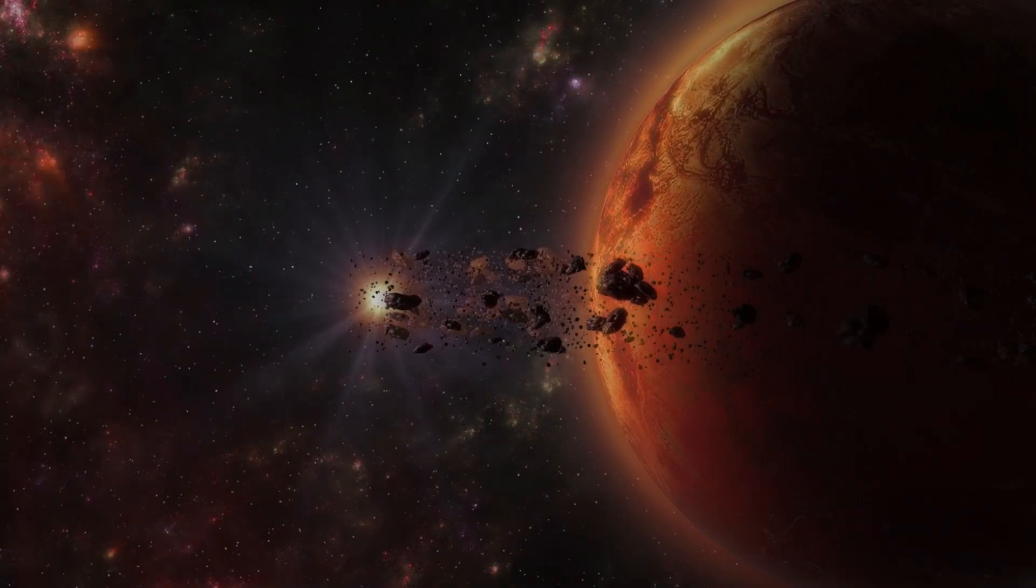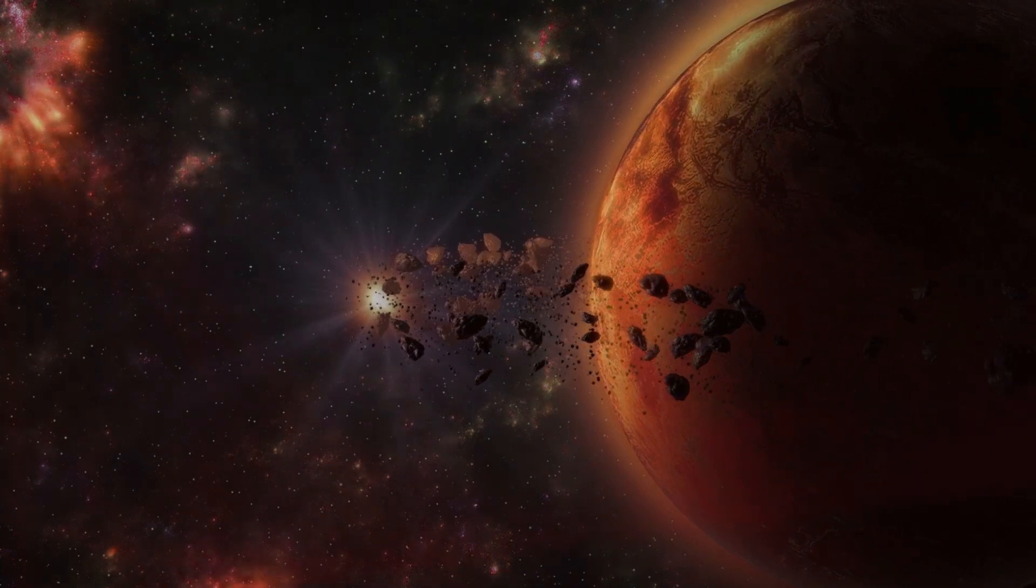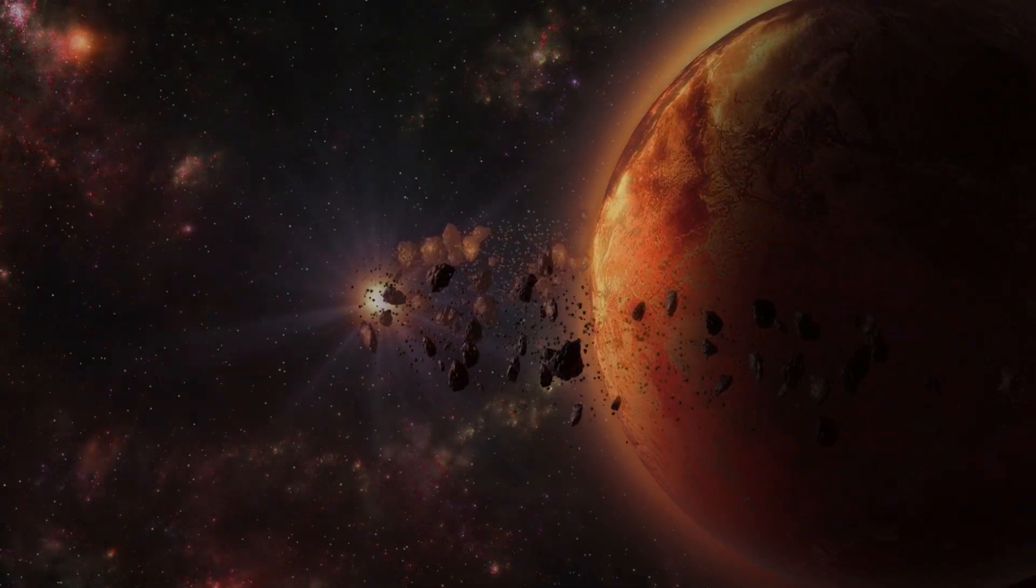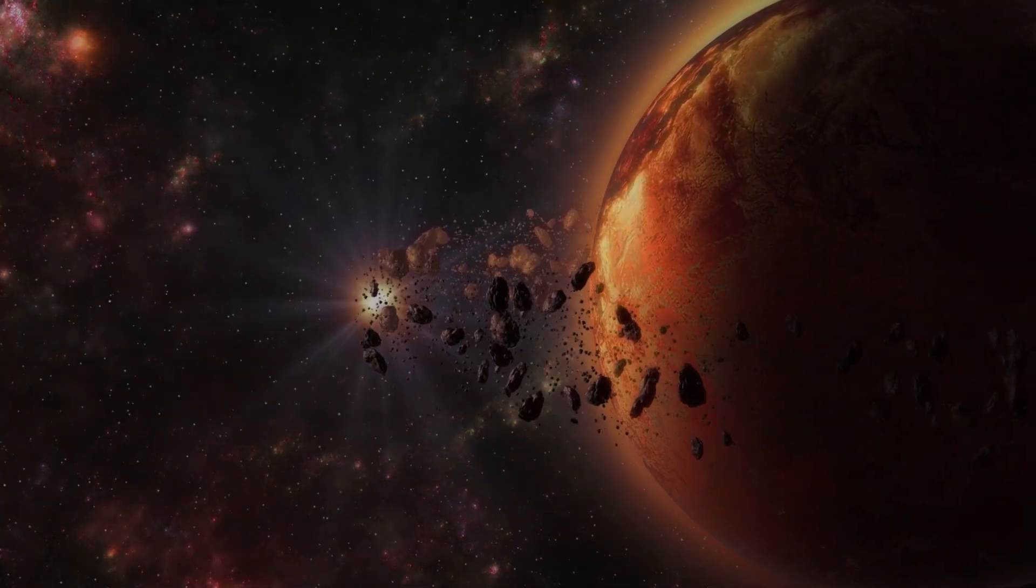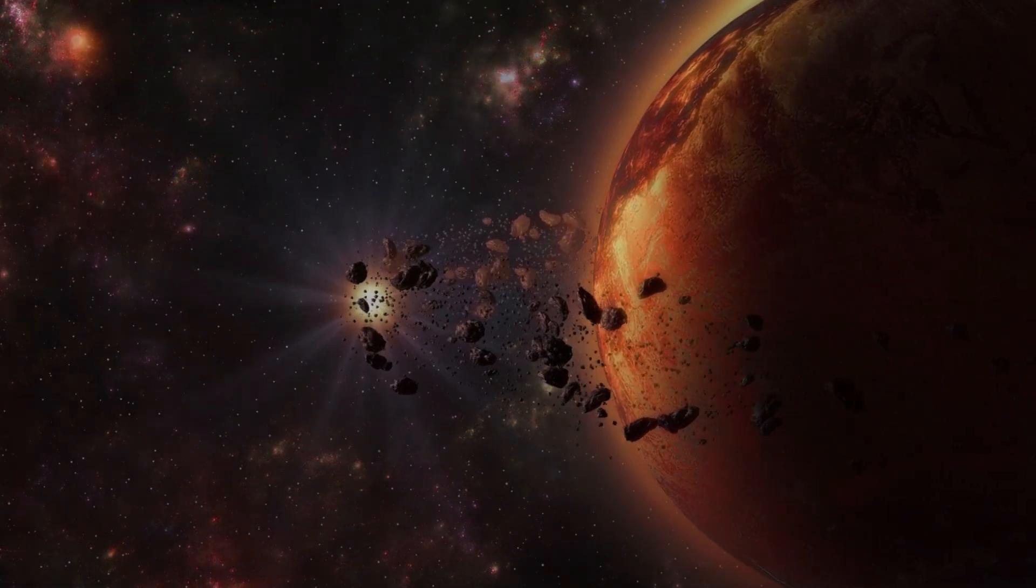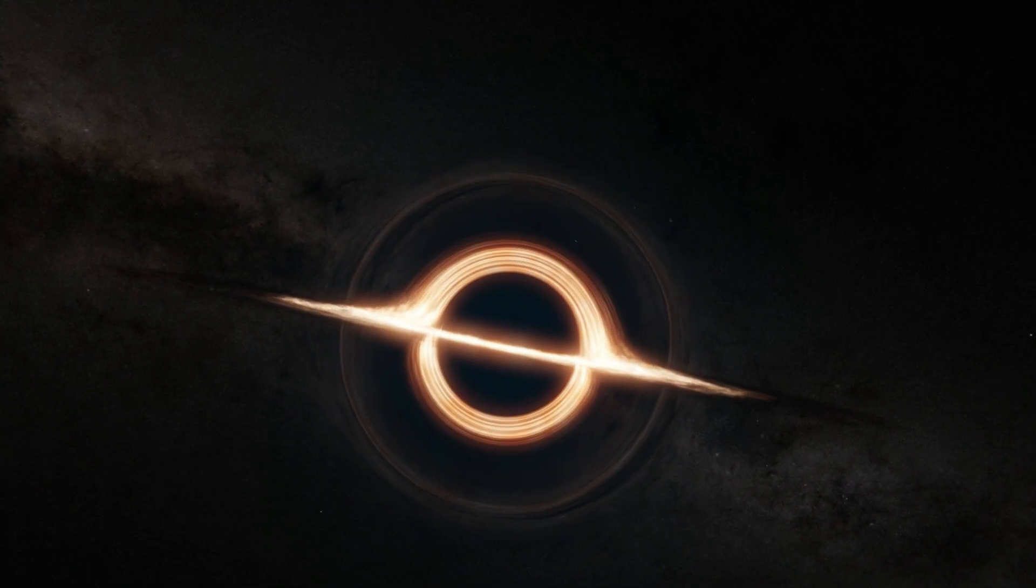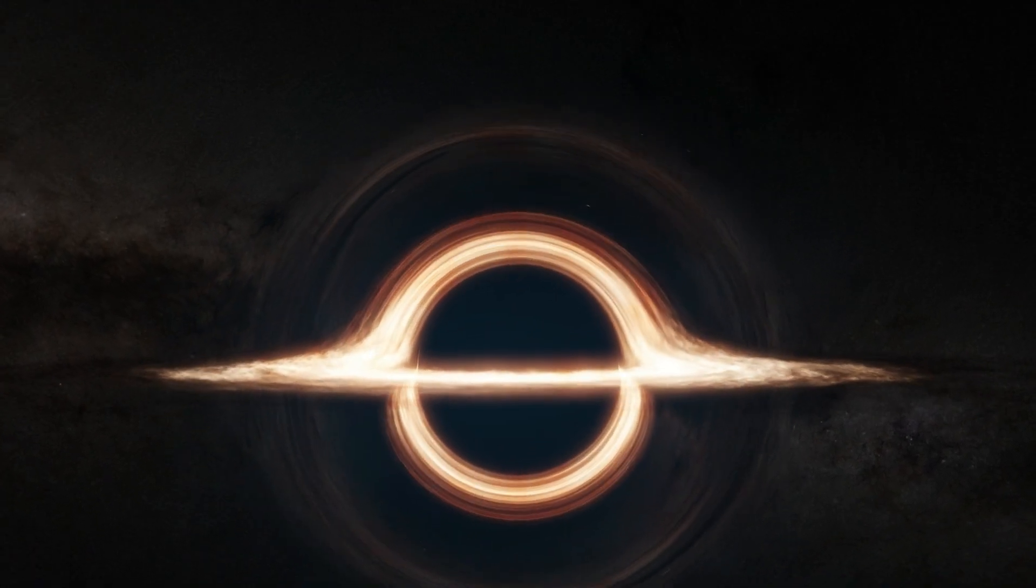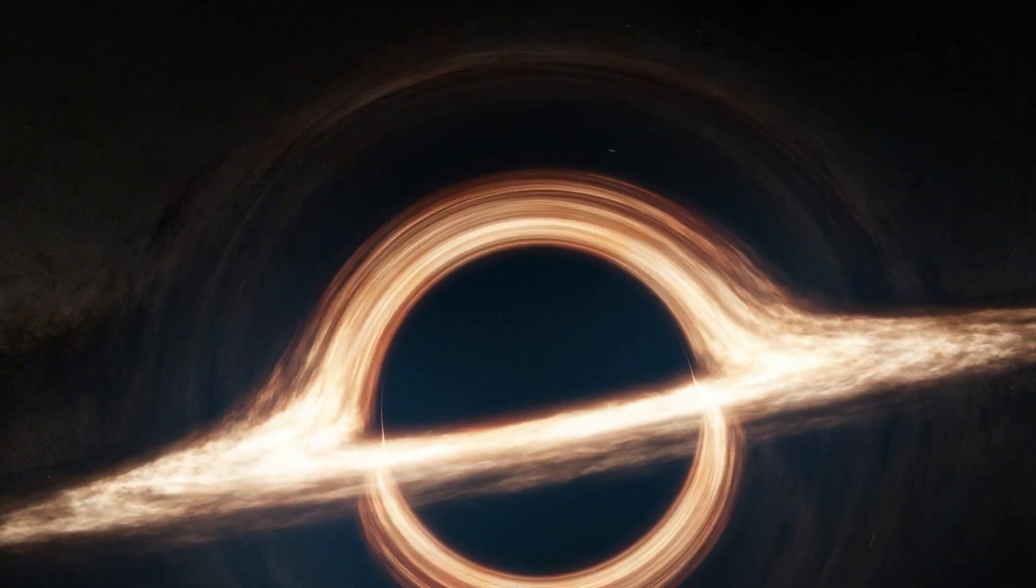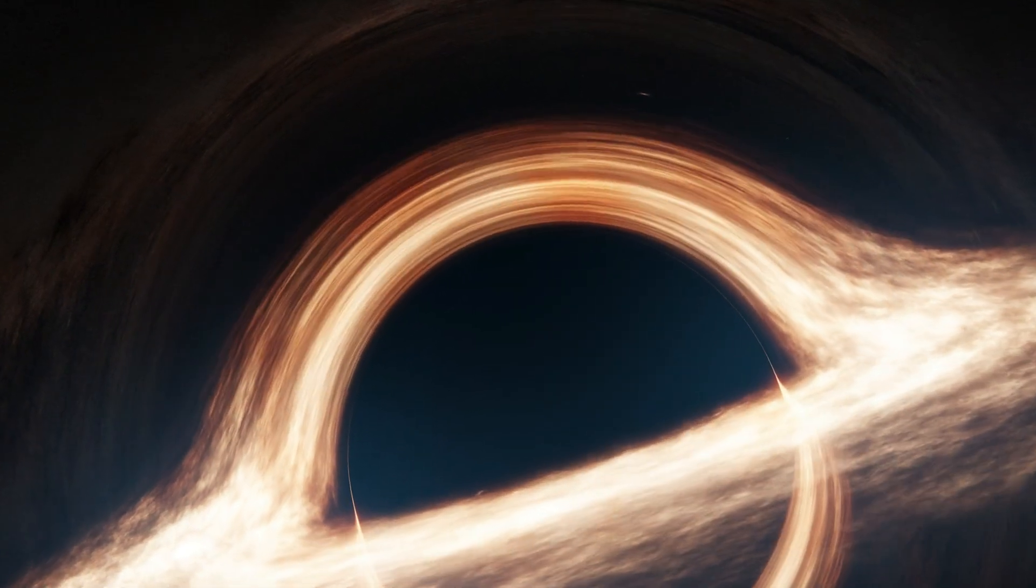Some planets are covered in oceans of lava, with volcanic activity so intense that it reshapes the landscape continuously. Others have atmospheres filled with toxic gases, where it rains sulfuric acid, making them utterly inhospitable. And then there are planets with gravitational forces so strong that they bend light, creating eerie visual distortions.